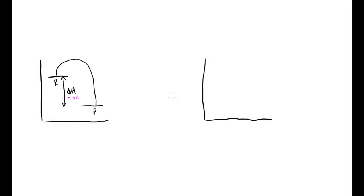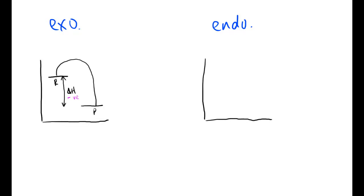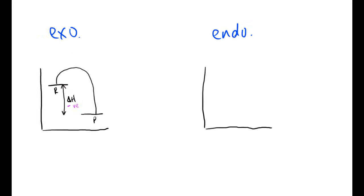For an endothermic reaction, the opposite occurs: the reactants start at a lower energy level and the products end up higher. Heat is taken in to reach the product level, giving a positive enthalpy change. The enthalpy change is still the difference between the two energy levels.